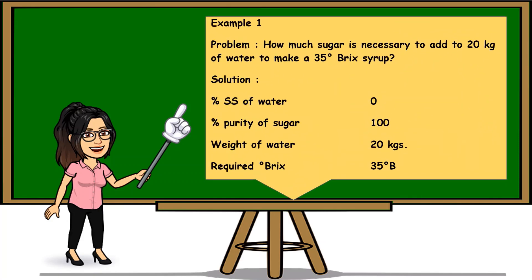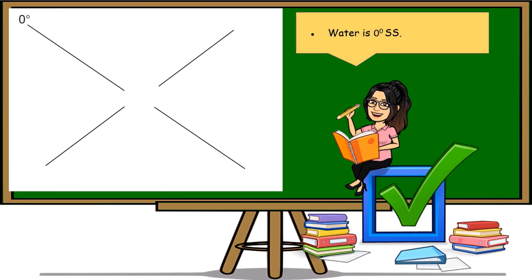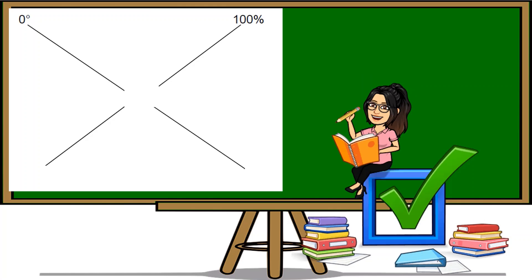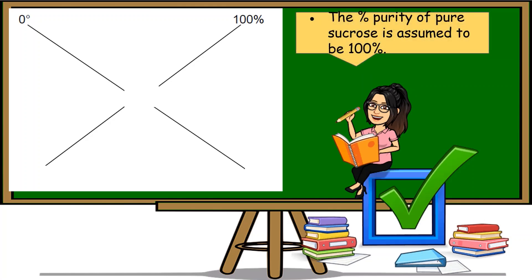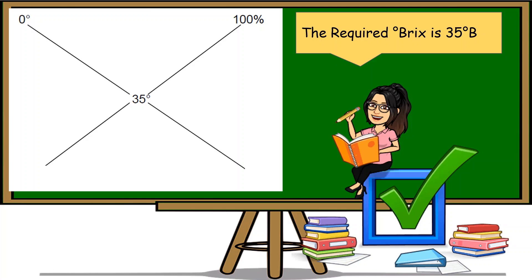Here is an example problem: How much sugar is necessary to add to 20 kg of water to make a 35 degree BRICS solution? Given: the percent soluble solid of water is 0, percent purity of sugar is 100, weight of water is 20 kg, and the required degree BRICS is 35 degrees. Water is 0 degree soluble solid and the percent purity of sucrose is assumed to be 100%.